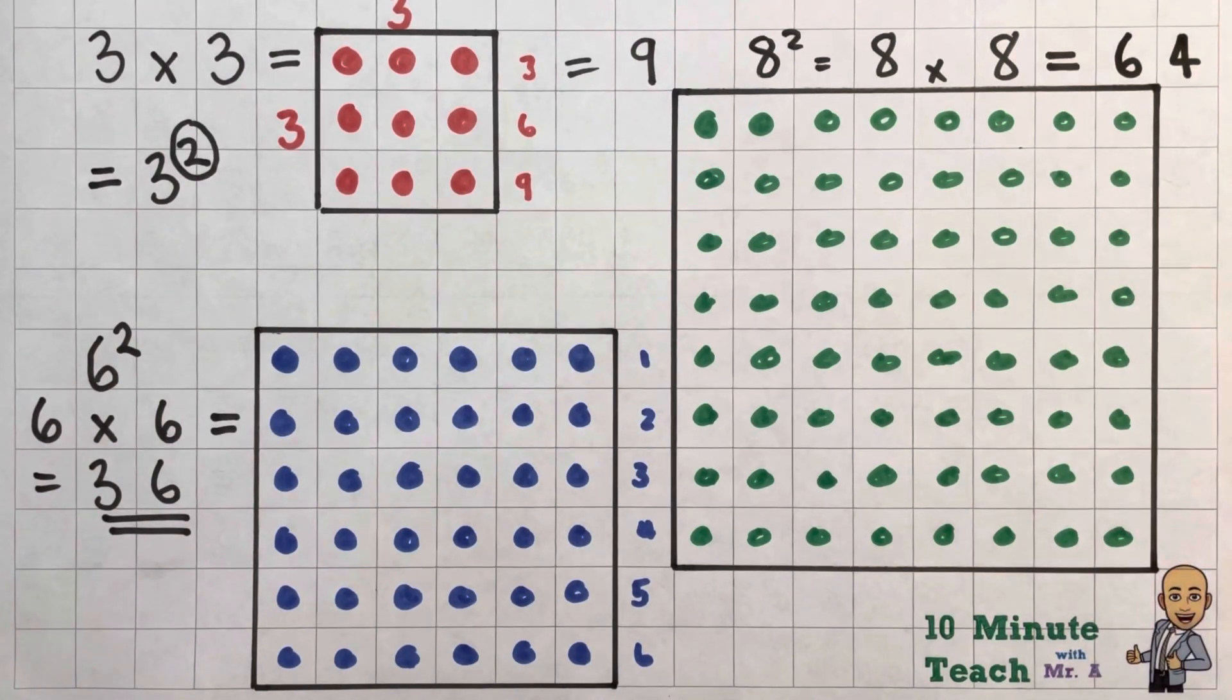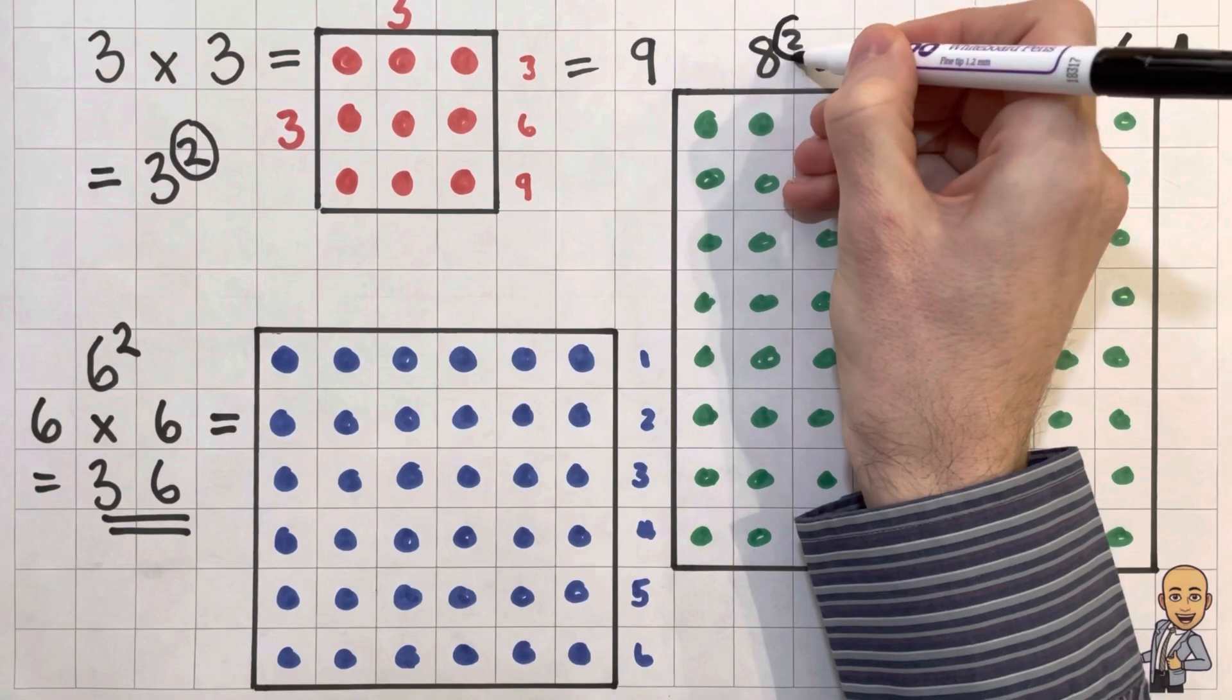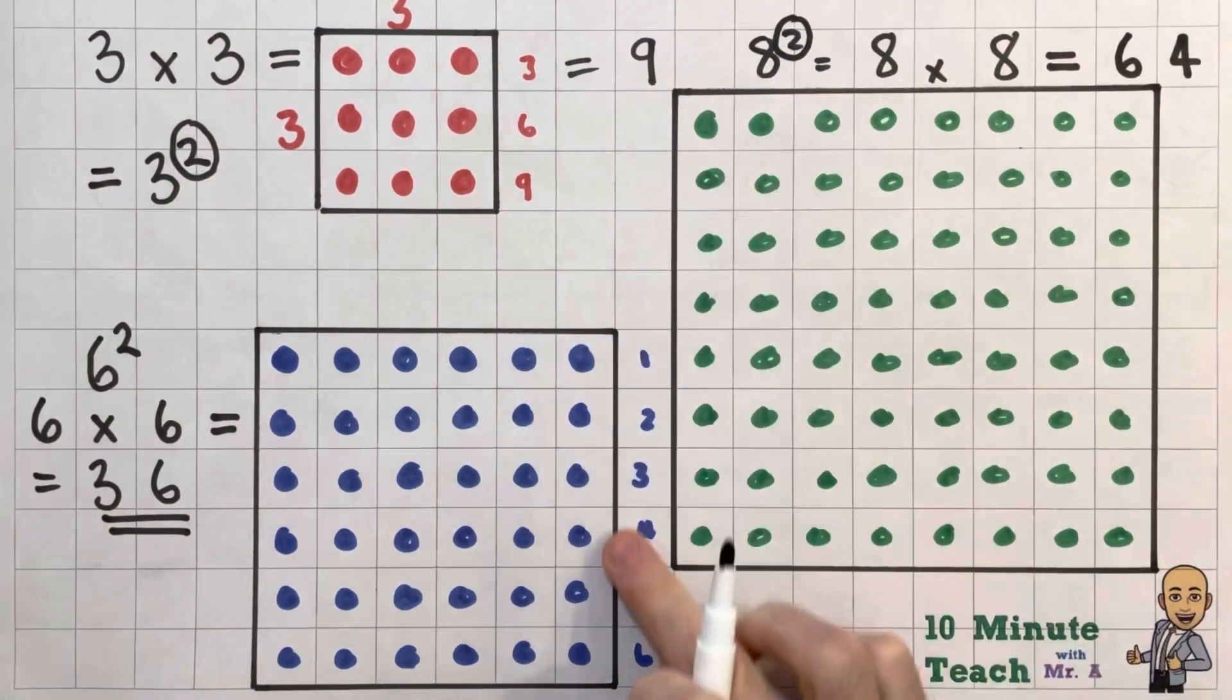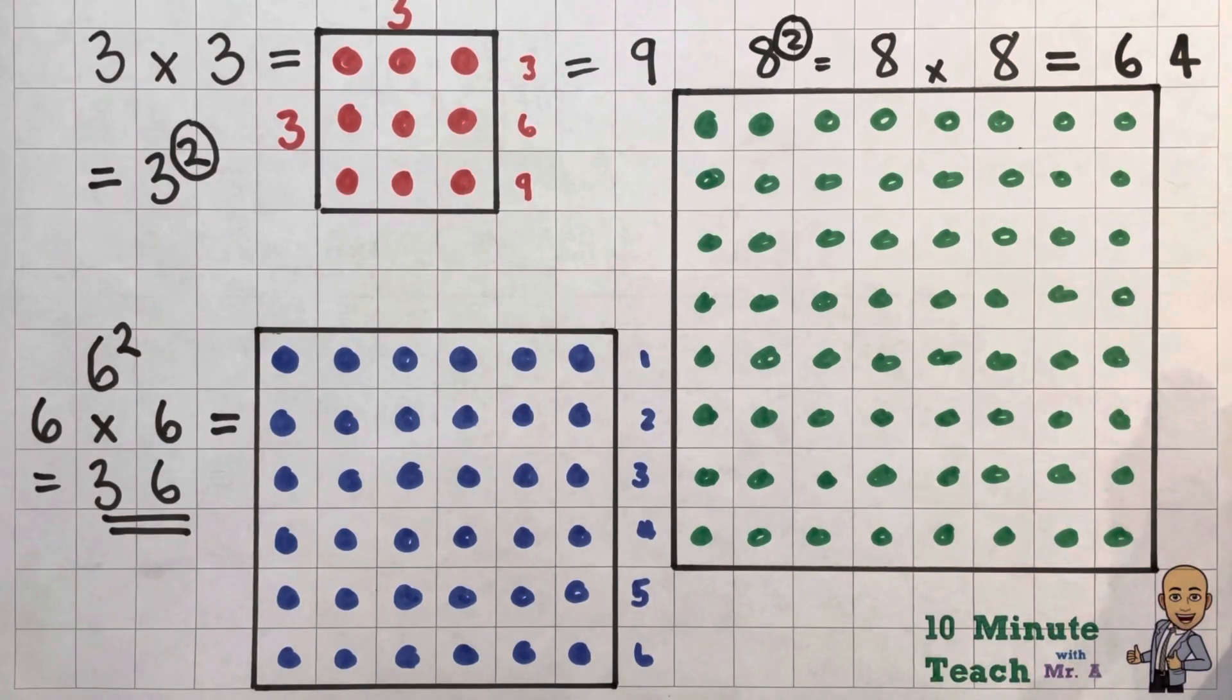There you have it. There's your square numbers. Have a go at drawing some out at home as well. But don't forget that you need the little symbol to say that you times the number by itself. And it makes that perfect square when you draw it out as an array.